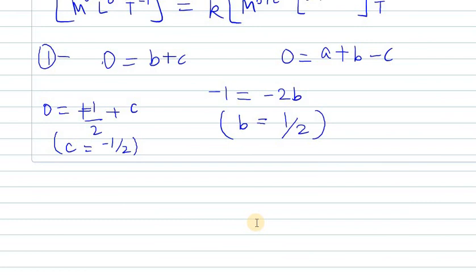To find A, we use equation 2 with the known values for B and C. Substituting B equals one-half and C equals minus one-half into 0 equals A plus B minus C gives A equals minus one-half, minus one-half plus one-half equals minus one. So the value for A is minus one.